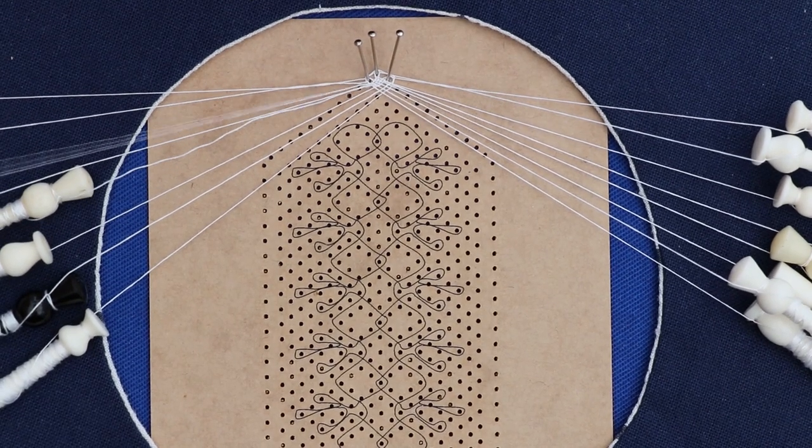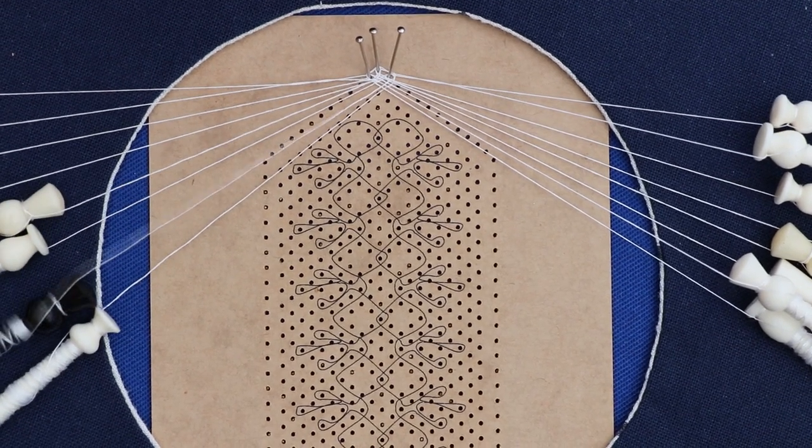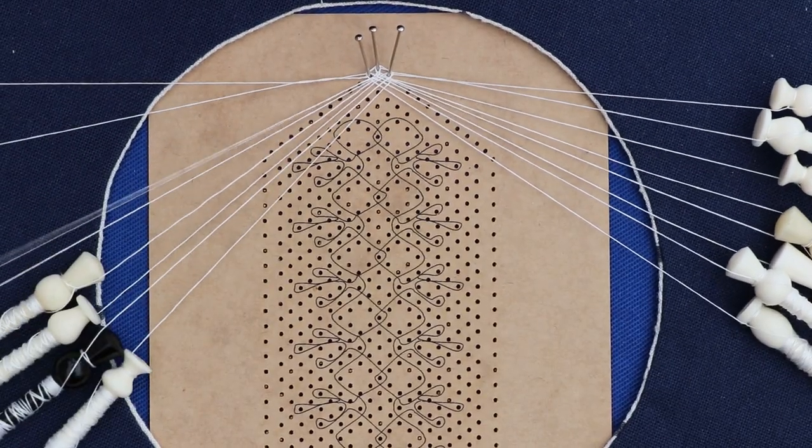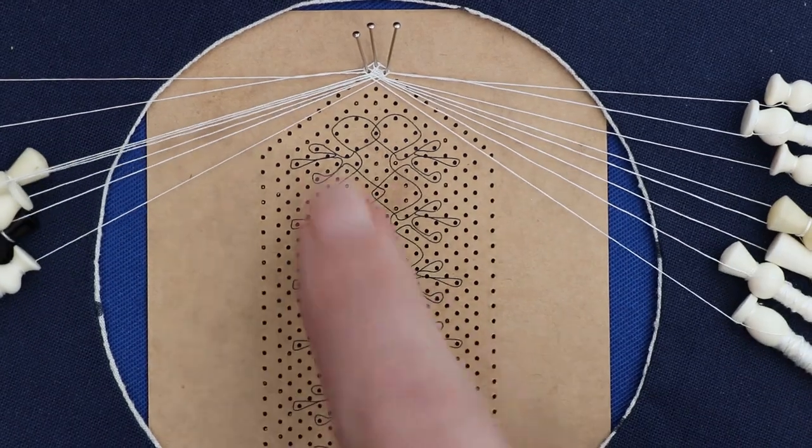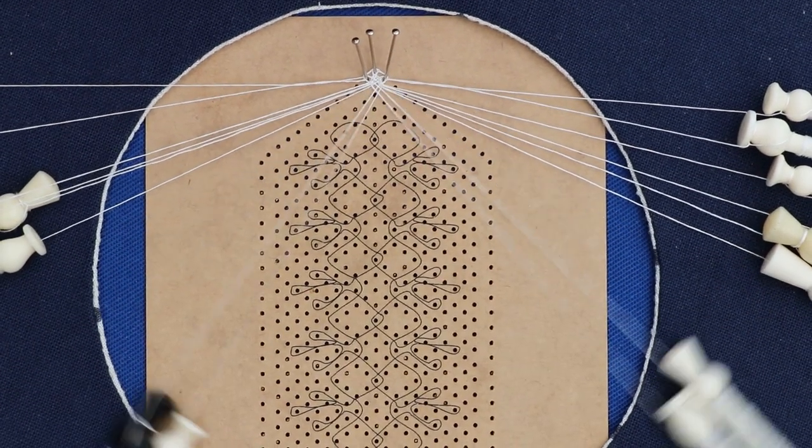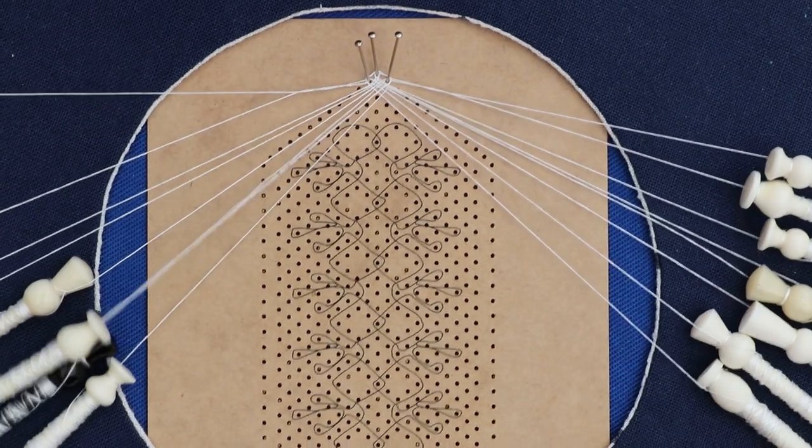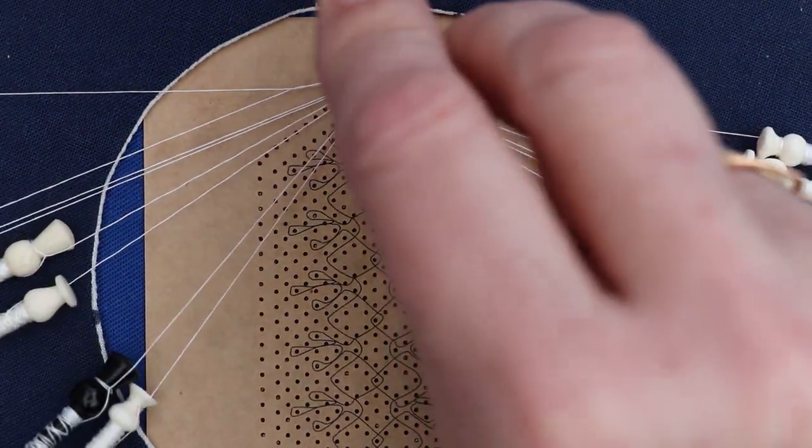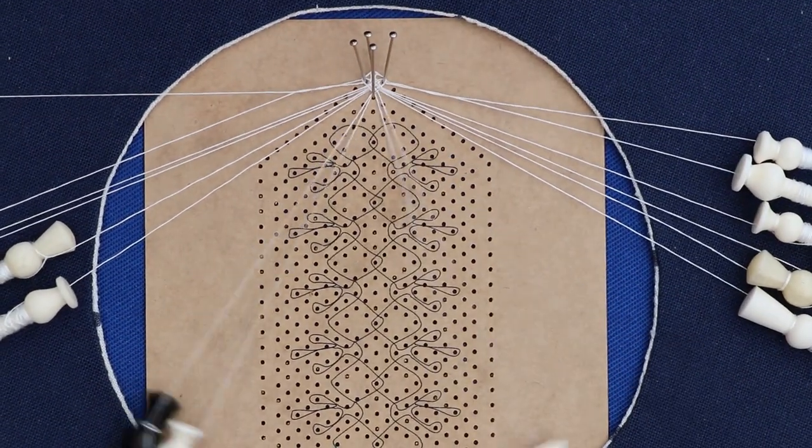Now depending on how wide your trail is, you may need to do this on the next two pins down, or in this case I could drop in two pairs in the middle here which would help fill the space.